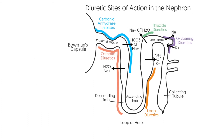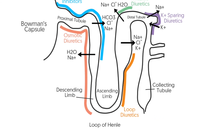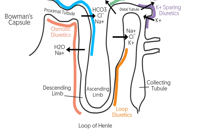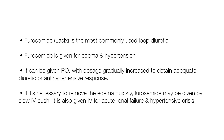Furosemide, or Lasix, is the most commonly used loop diuretic. Furosemide is given for edema and hypertension. It can be given by mouth, with dosage gradually increased to obtain the adequate diuretic or antihypertensive response. If it is necessary to remove edema quickly, furosemide may be given by slow IV push. It is also given IV for acute renal failure and hypertensive crisis.